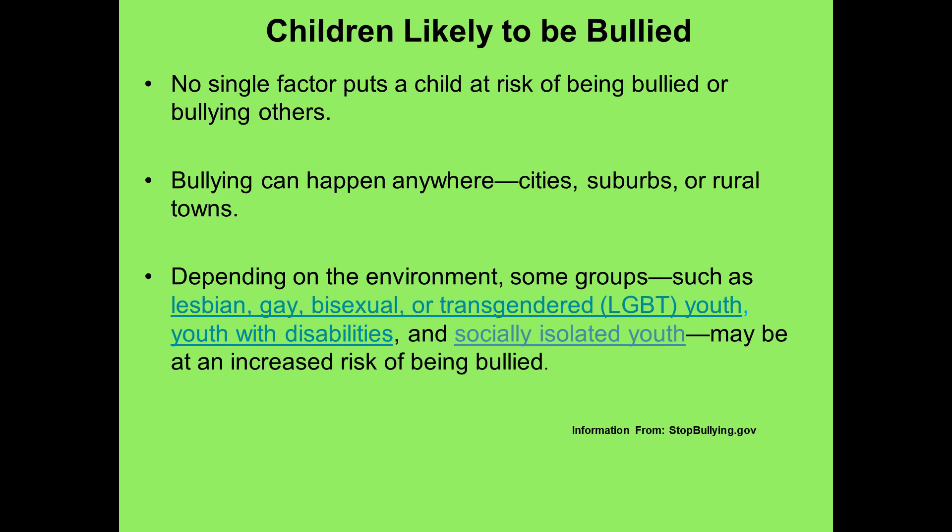Let's look at children likely to be bullied. While there's no single factor that puts a child at risk of being bullied, it can happen to anyone, anywhere — cities, suburbs, rural settings. But there are some common risk factors. Often it's children who are perceived as different from their peers — they may be overweight or underweight, wearing glasses, wearing different clothing, being new to a school, or unable to afford what others have. They may be perceived as weak and unable to defend themselves, may be anxious, depressed, or have low self-esteem, be less popular, have few friends, or be seen as annoying or provoking.